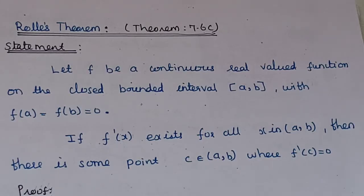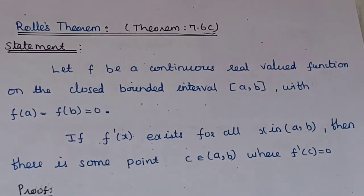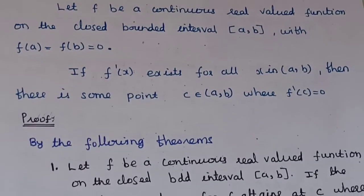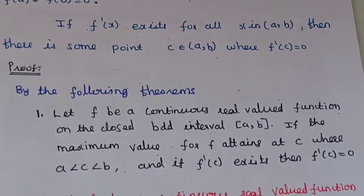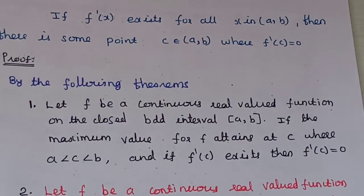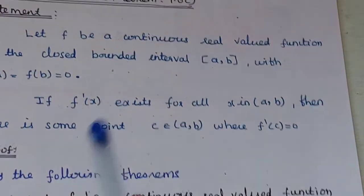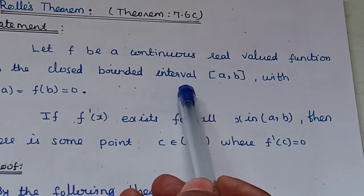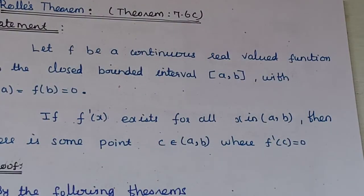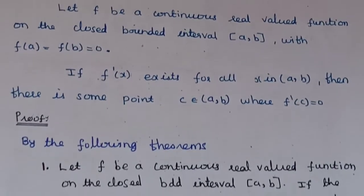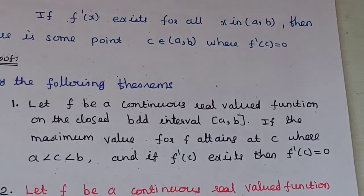In Rolle's theorem proof, we have two supporting theorems — Theorem 6.6a and 6.6b. The common statement is: let f be a continuous real-valued function on the closed bounded interval [a, b].